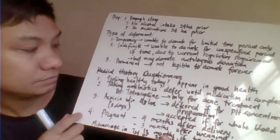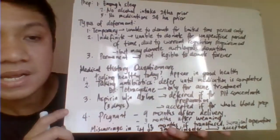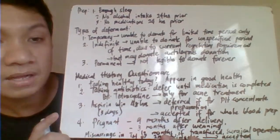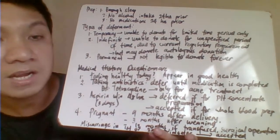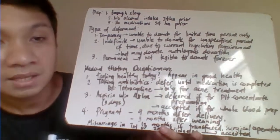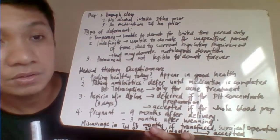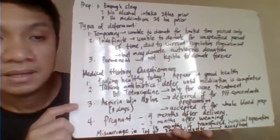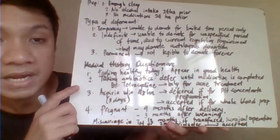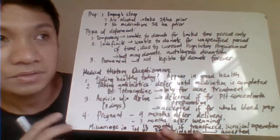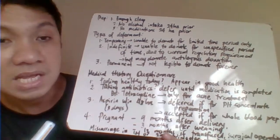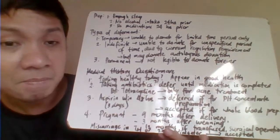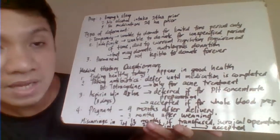In the medical history questionnaire, the first question is whether the patient is feeling healthy today. We check the patient's physical appearance — do they have a fever, are they feverish, are they not feeling well? If that is the case, the patient will be rejected.